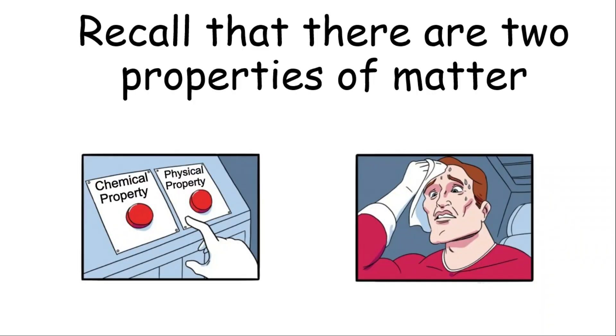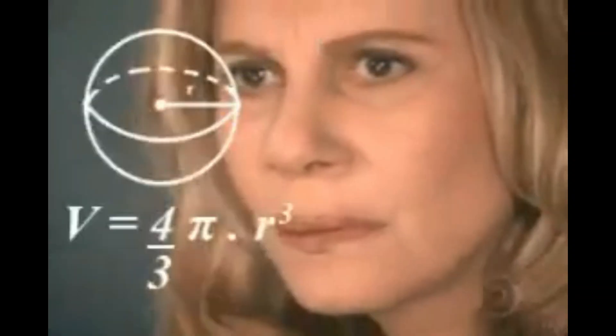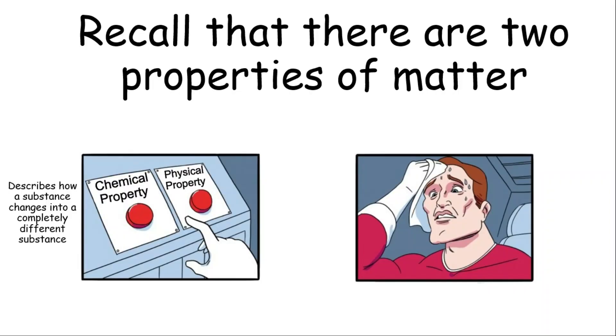Recall that there are two properties of matter, the chemical property and the physical property. The chemical property describes how a substance changes into a completely different substance. On the other hand, physical property can be observed without changing the identity of the substance.